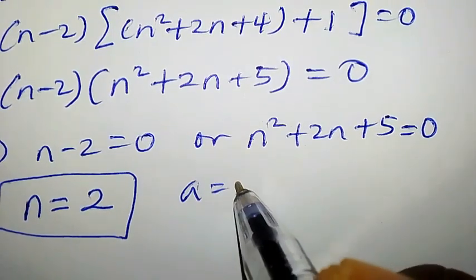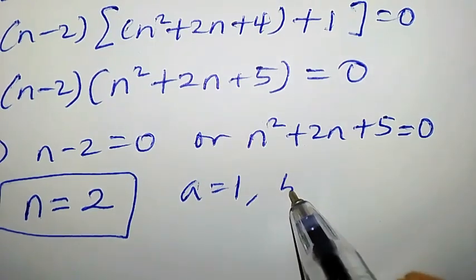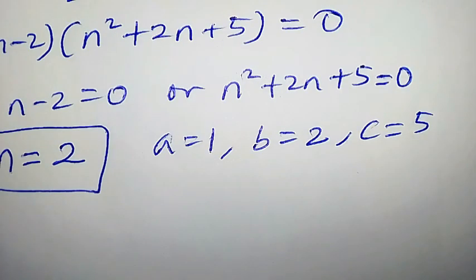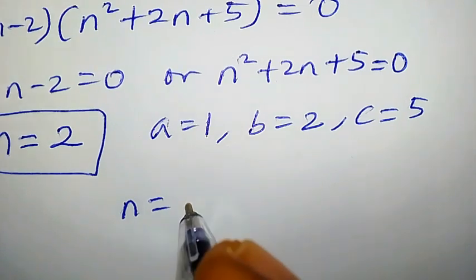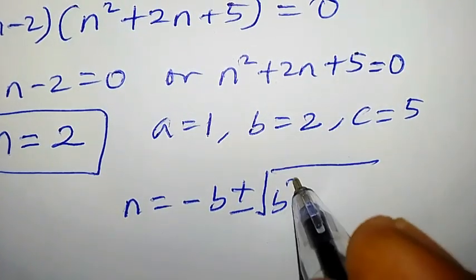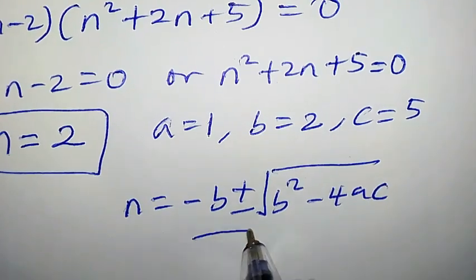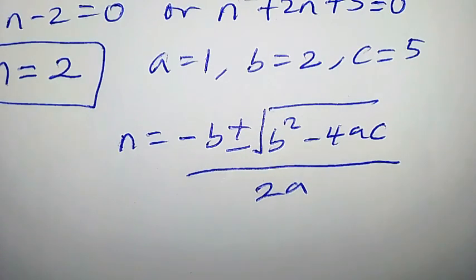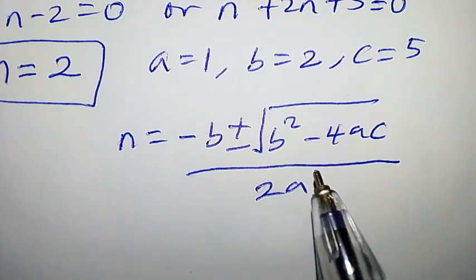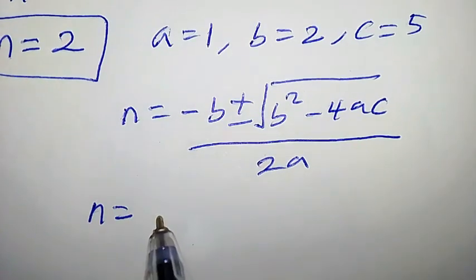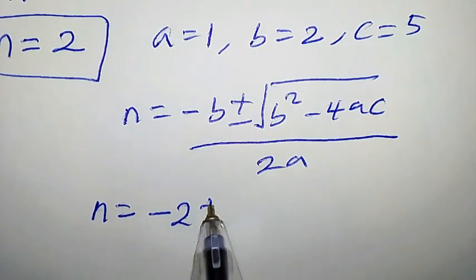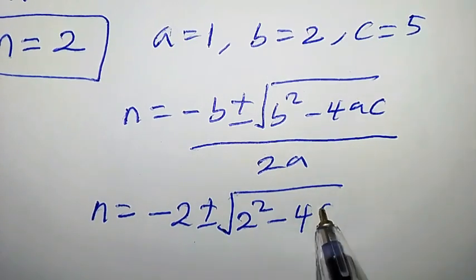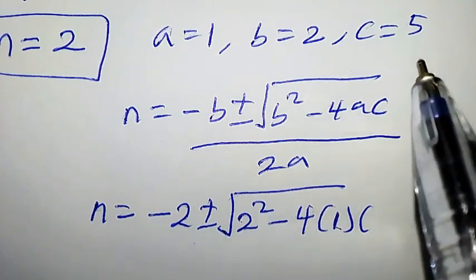Our a here is 1, which is the coefficient of n², our b is 2, which is the coefficient of n, and our c is 5, which is the constant. The quadratic formula says n equals minus b plus or minus square root of b² minus 4ac, all over 2a. We'll plug in a=1, b=2, c=5.